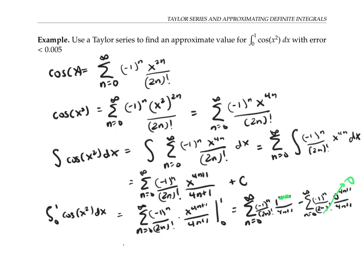I'm going to write out the first few terms of my series. Notice that this is an alternating series. So if I just add up a partial sum, then I can bound my remainder by the absolute value of the next term.